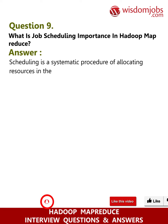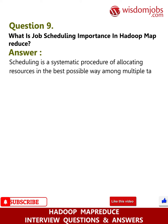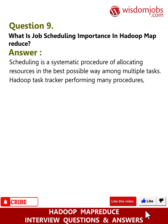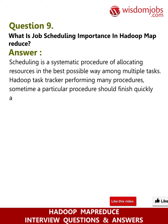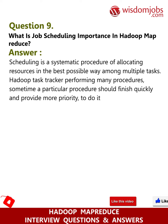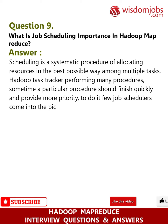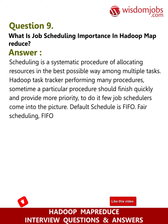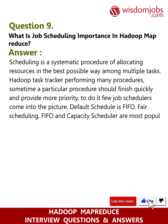Question 9: What is job scheduling importance in Hadoop MapReduce? Answer: Scheduling is a systematic procedure of allocating resources in the best possible way among multiple tasks. The Hadoop task tracker performs many procedures, and sometimes a particular procedure should finish quickly with higher priority. A few job schedulers come into the picture — the default scheduler is FIFO, and fair scheduling and capacity scheduler are the most popular Hadoop schedulers.